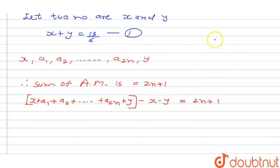Now if we find the sum of this series, we know that the sum Sn formula is n by 2 into a plus an, where a is the first term and an is the last term.